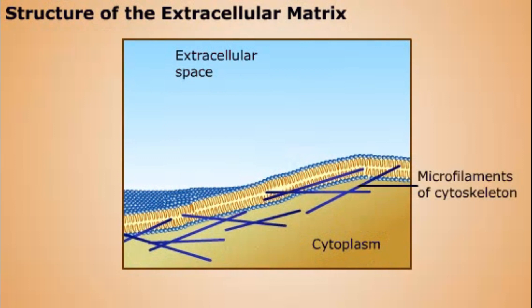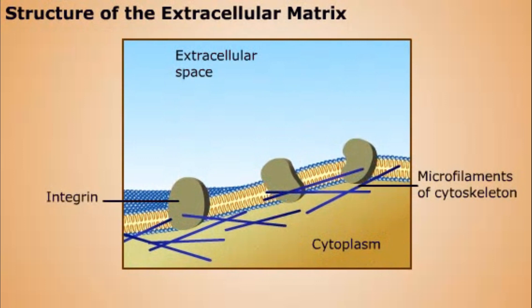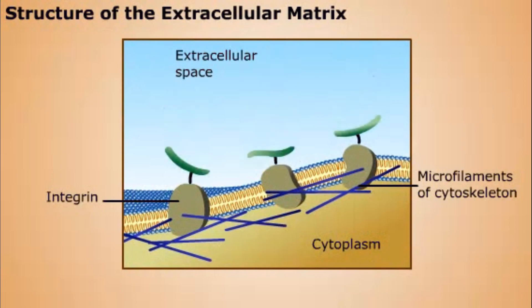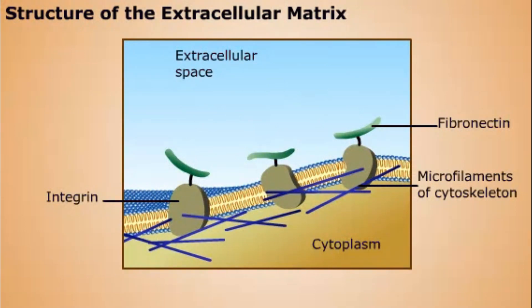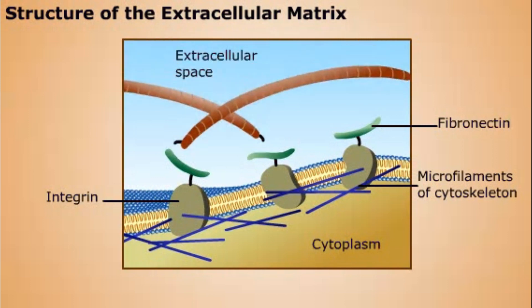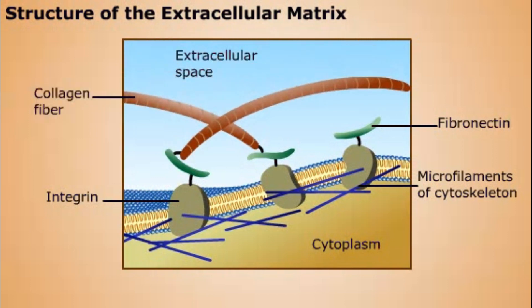Cells have a network of microfilaments, part of the cytoskeleton, just inside the plasma membrane. Proteins called integrins span the plasma membrane. They interact with the microfilaments on the cytoplasmic side and with a protein called fibronectin on the extracellular side. Together, integrins and fibronectin promote cell adhesion, migration, and changes in cell shape.